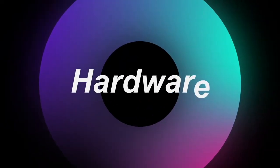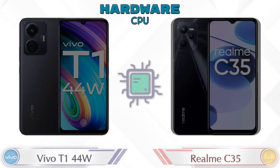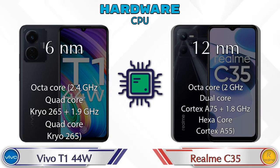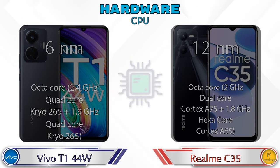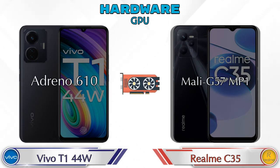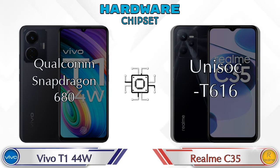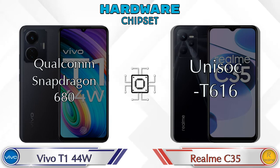First we talk about the most important part of the phone — hardware. Looking at the CPU and GPU: the T1 44-watt has the Adreno 610 and the Realme Narzo 35 has the Mali-G57. For the chipset, the T1 44-watt has the Qualcomm Snapdragon 680 and the Realme Narzo 35 has the UniSoc T616.